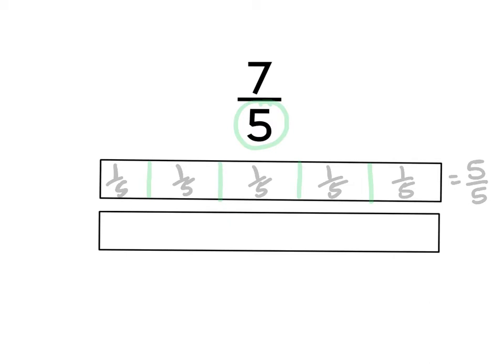So I'm going to take 7 fifths, and I'm going to subtract this 5 fifths from 7 fifths. And it's going to tell me how many more fifths I need to create 7 fifths. So I took out this 1 whole because subtracting 5 fifths is the same as subtracting 1 whole.